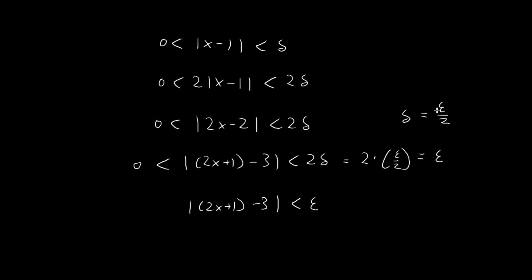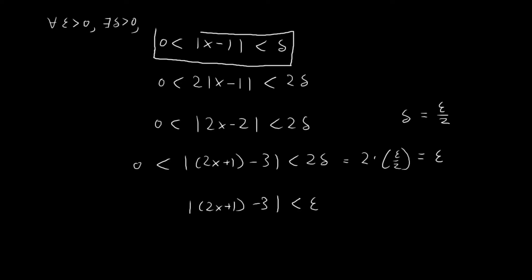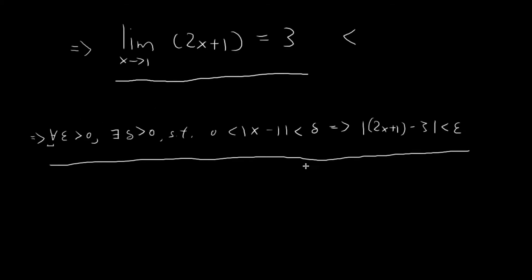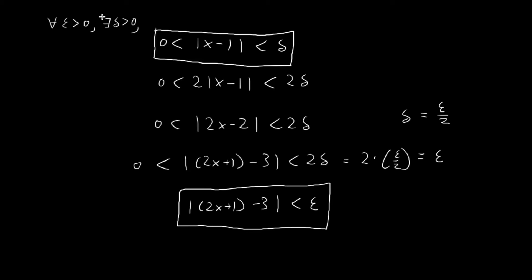We've just shown that for no matter what value of epsilon we choose — note that we've imposed no restrictions on the value of epsilon — no matter what value of epsilon you choose, there will exist a delta larger than 0 such that if your x is at a distance of delta away from 1, then it immediately implies that 2x plus 1 must be at a distance of epsilon away from 3. And that really is essentially the epsilon-delta definition.